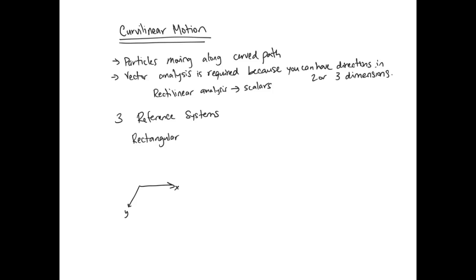If you have x, y, z coordinates and a particle moving along some path, you could draw a vector from your origin to your particle. This would be your position vector r of t. The position vector r of t would be given in terms of the x, y, z coordinates: r of t is equal to x of t in the i direction, plus y of t in the j direction, plus z of t in the k direction.